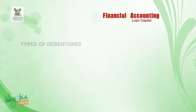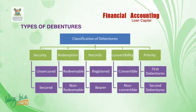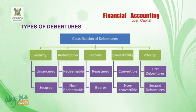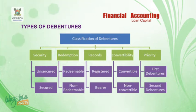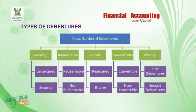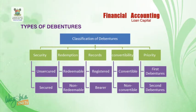Types of debentures. Looking at the chart display, we have five types of debentures generally, classified on the bases of: security, redemption, records, convertibility, and priority. Under security, debentures are further classified into secured and unsecured. Under redemption, into redeemable and non-redeemable. Under records, into registered and bearer debentures. Under convertibility, into convertible and non-convertible. And under priority, into first debentures and second debentures.